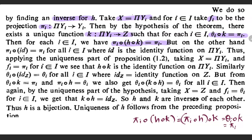So pi_i composition h composition k is equal to pi_i. But we know that pi_i composition the identity function is also equal to pi_i, where id is the identity function on product yi. We know that there exists only one function whose composition with the projection function is equal to pi_i, namely the evaluation function. So using the uniqueness part of the characterization of the evaluation function, taking x equal to product yi and fi equal to pi_i, we can see that h composition k is in fact equal to the identity function on product yi. Similarly, theta_i composition the identity function on z equals theta_i, and since theta_i composition k composition h is also equal to theta_i, we must have k composition h equal to the identity function on z.